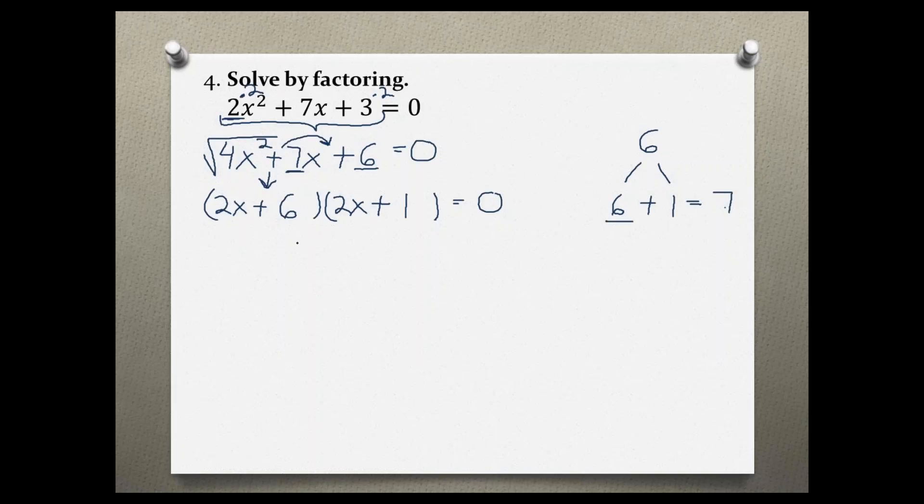Previously when we have a coefficient of 1 we would be done, but because we multiplied by 2 in the beginning we have to divide by 2. Only one of these two binomials is divisible by 2, and this would be the left side. So dividing by 2, I can put a 1 here, and now 2 divided by 2 is just x, and 6 divided by 2 is 3. Then anything divided by 1 just stays itself, so I can bring that down, and all that equals 0.